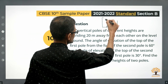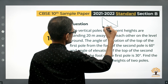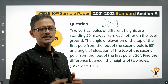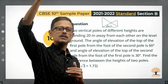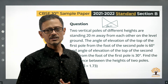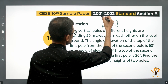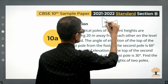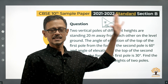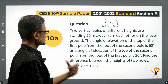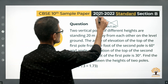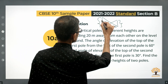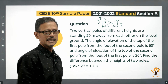From one pole's foot we are looking at the top of the other, and from the other one we are looking at the top of the second. The more vertical something is, the taller it is, and the higher the angle of elevation will be. So to the top of the taller pole, the angle of elevation is 60 degrees, and to the top of the shorter pole it is 30 degrees. What they're asking us to find out is the difference in the heights of these two poles.